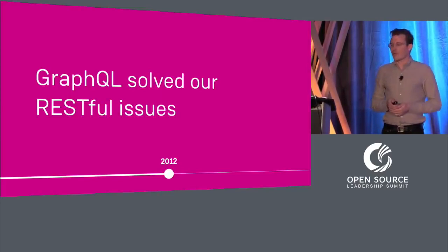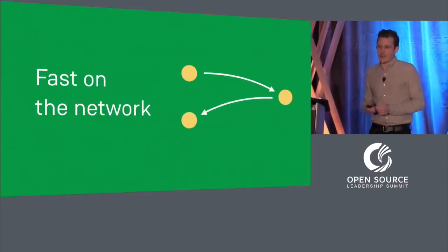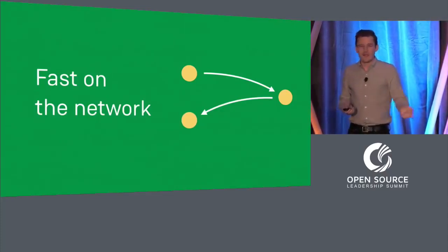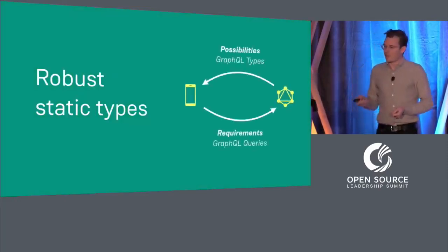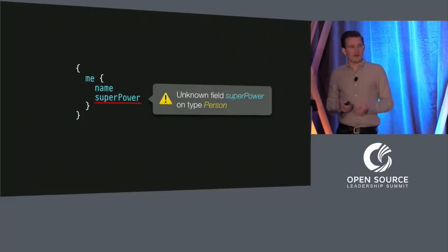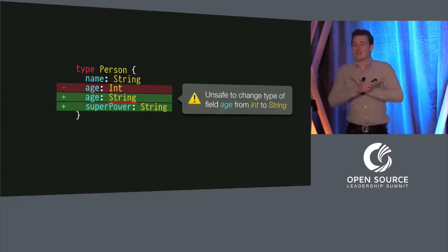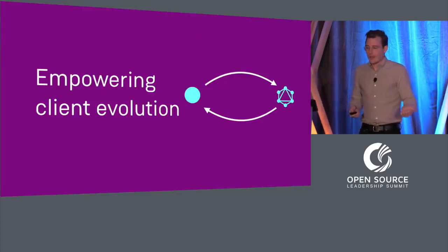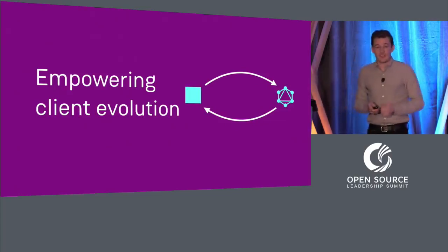GraphQL ultimately helped us solve the problems we were encountering with RESTful APIs. First, it's fast: because each GraphQL query describes exactly what's necessary, the backing service only needs to fetch and prepare what's asked for, and the entire result can always be delivered in a single network round trip. It's robust: GraphQL APIs describe what's possible with static types, and clients describe their requirements with GraphQL queries — which are selections over those types — meaning a query can be verified before it's run, actually before you even commit it into your client-side code base. And it's empowering: a GraphQL client describes exactly what they need, which means they're rarely blocked by waiting on some server-side change, and GraphQL APIs never need to version.